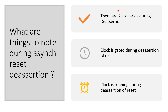There are two scenarios here: the clock is gated during the de-assertion of reset, and the clock is running during the de-assertion of reset. In the case where the clock is gated during de-assertion, we can safely de-assert the reset and ungate the clock after the de-assertion. If the clock is running during de-assertion, we need to take care of the recovery and removal timing. The de-assertion of reset must be synchronous with respect to the clock, and reset synchronizers are needed in this case.